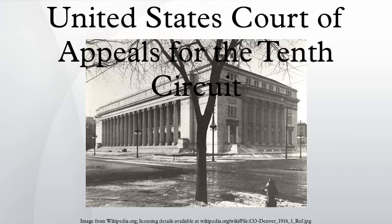Chief judges have administrative responsibilities with respect to their circuits, and preside over any panel on which they serve unless the circuit justice is also on the panel. Unlike the Supreme Court, where one justice is specifically nominated to be chief, the office of chief judge rotates among the circuit judges. To be chief, a judge must have been in active service on the court for at least one year, be under the age of 65, and have not previously served as chief judge. A vacancy is filled by the judge highest in seniority among the group of qualified judges. The chief judge serves for a term of seven years or until age 70, whichever occurs first.